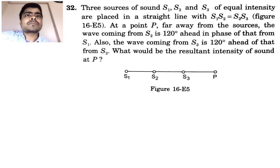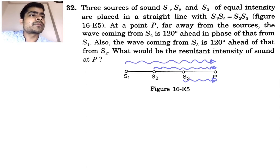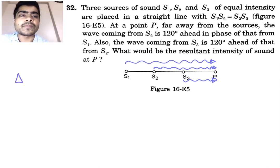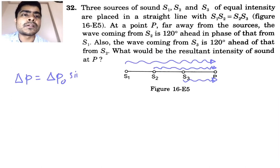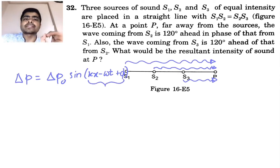Three waves are coming from S1, S2, and S3 and all reach point P, having traveled different path lengths. So when they reach point P, their phases will be different. The phase is defined using the pressure difference: delta P equals delta P-naught times sine of (kx minus omega t plus phi). This angle term is called the phase.